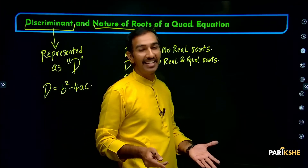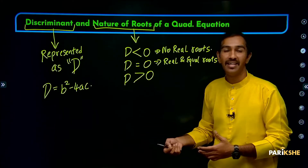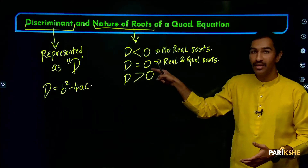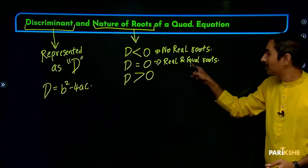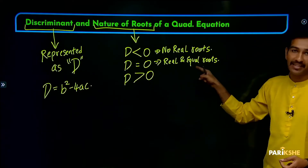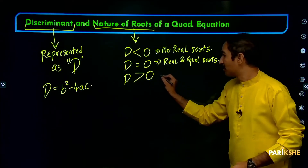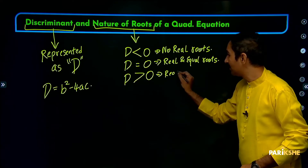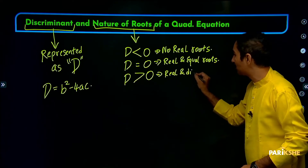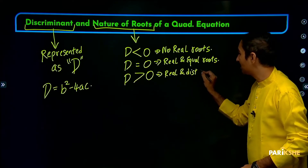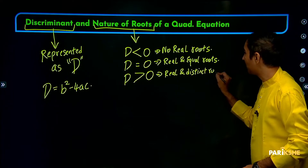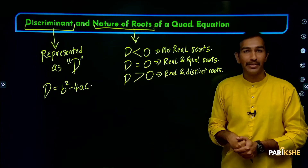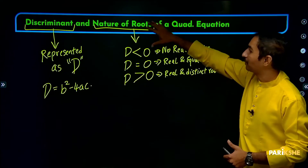So when D equals 0, the two roots will be equal, and they can be rational or irrational. If D is greater than 0, we get real and distinct roots — that is, two different real roots.